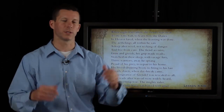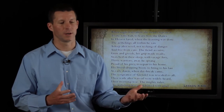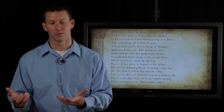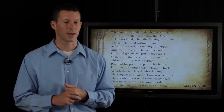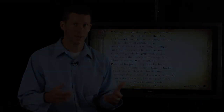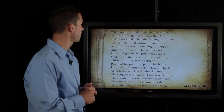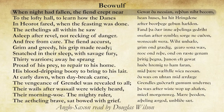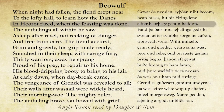There's a great hall called Herat, and there's feasting and partying and singing going on in the hall. There's a monster named Grendel who lives in a cave in the sea. He comes out, hears the feasting and the reveling, and he hates it — he wants to put it to an end. And listen to hear the alliteration in this particular section. It says: "When night had fallen, the fiend crept near. Yewat tha neosian, sithan nikt become. To the lofty hall, to learn how the Danes. Heion hu ses, hu hit ring dene. In Herat fared."